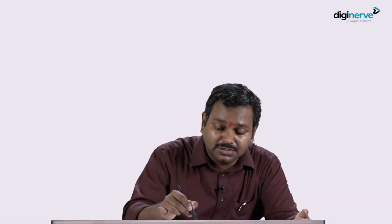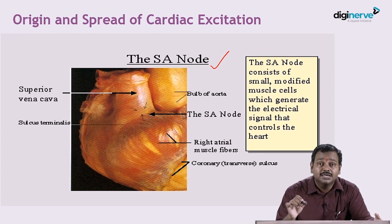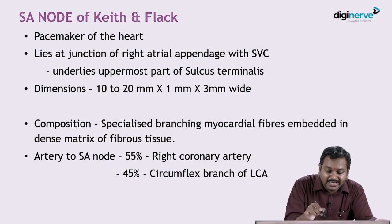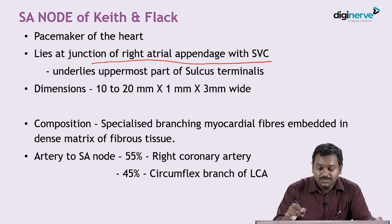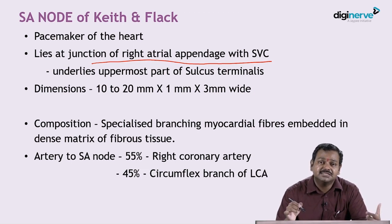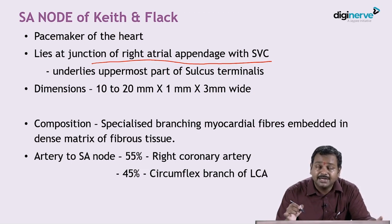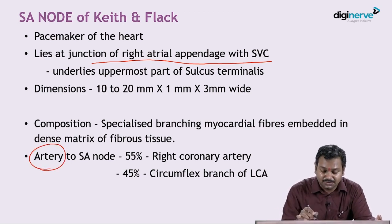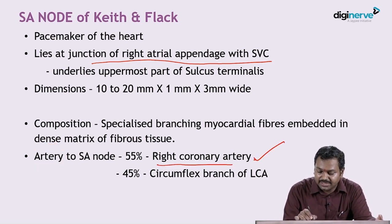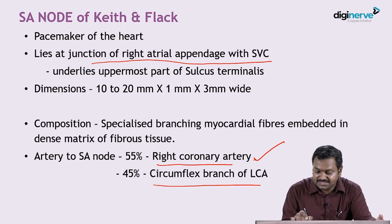The SA node is the pacemaker of the heart and the most important part of the conduction system. Why is it the pacemaker? It's located at the junction of the right atrial appendage with the superior vena cava. It has the highest intrinsic rate of impulse generation compared to any other portion of the heart, which is why it's the pacemaker. It's important to know the arterial supply to the SA node: in 55 percent of individuals it's the right coronary artery, and in 45 percent it's the left circumflex artery.